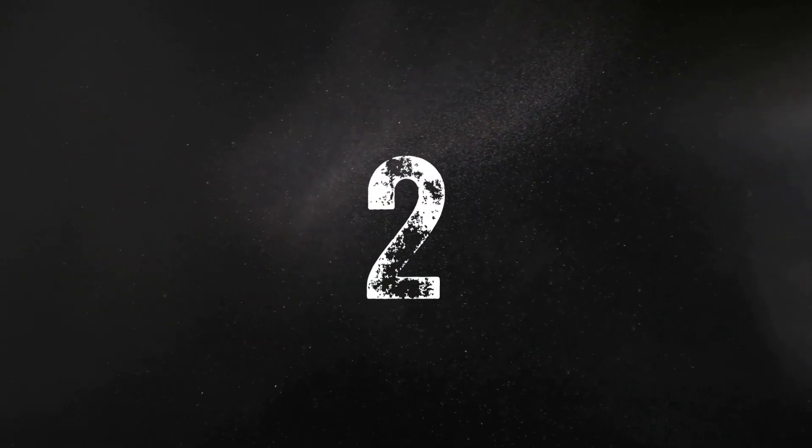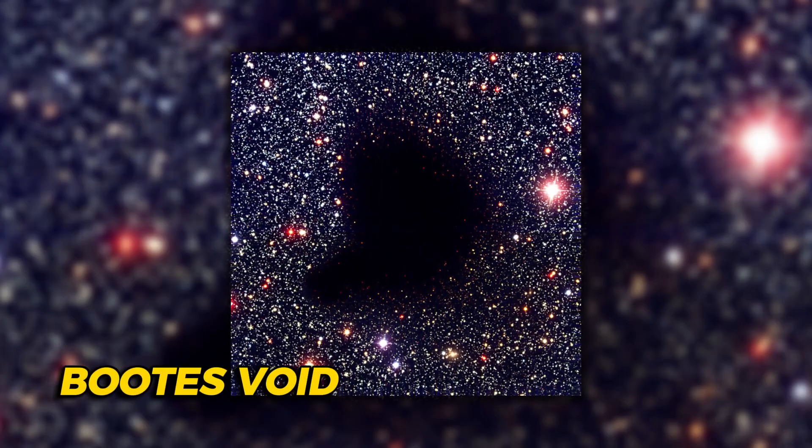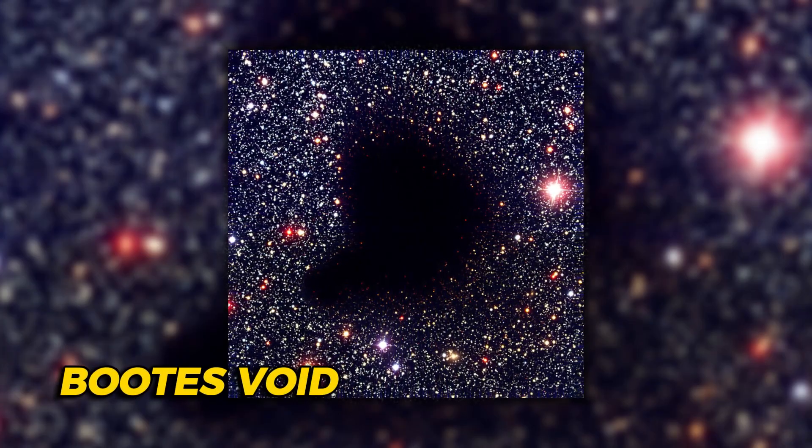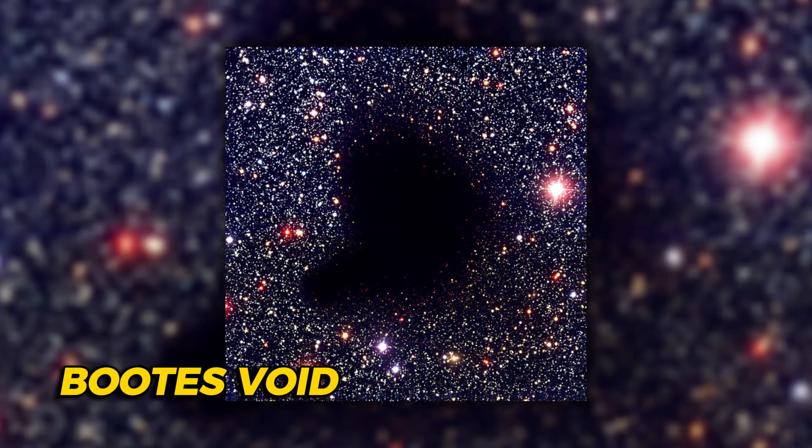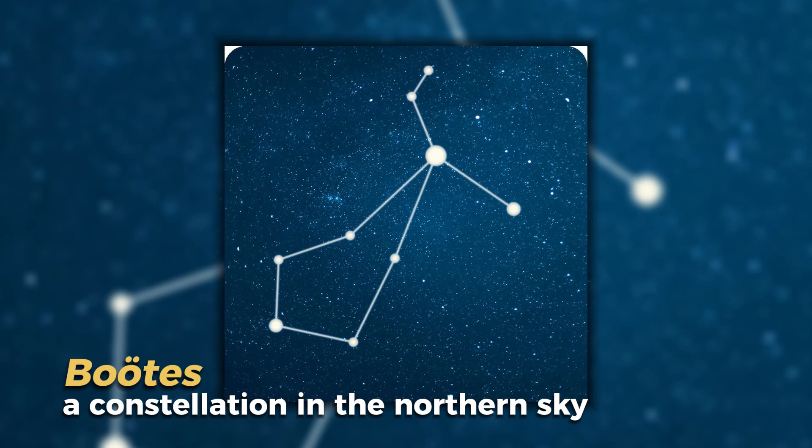The Boötes Void, also known as the Great Nothing, is a vast region of space that is unusually empty of galaxies. It's located in the constellation Boötes, about 700 million light-years away from Earth.